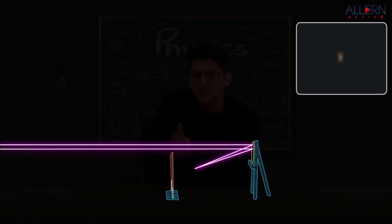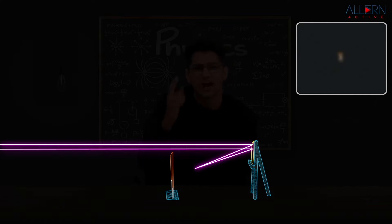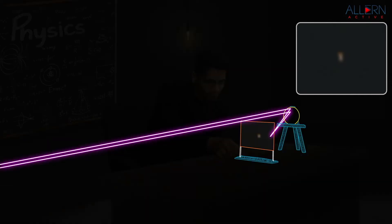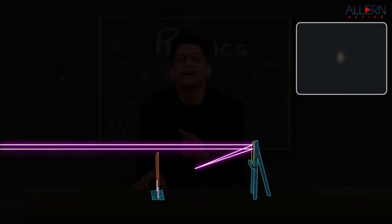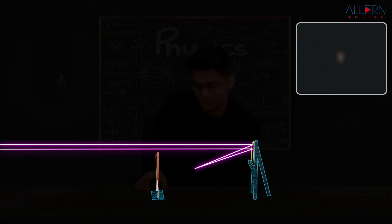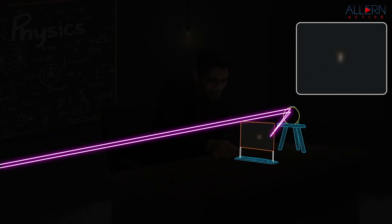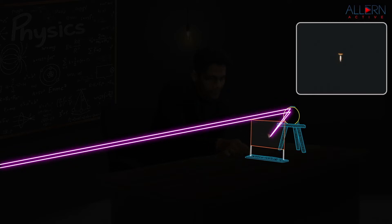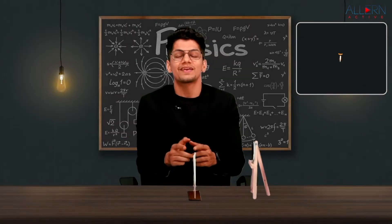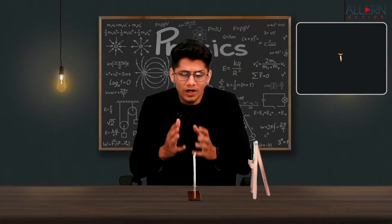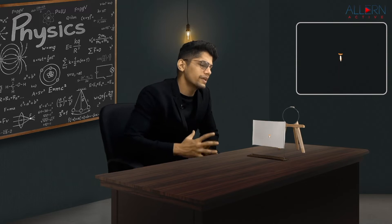Let's adjust the screen to find where we get a sharp image. If I move the screen away from the mirror, the image gets more blurred, so we move it towards the mirror. Now you can see that the image formed on the screen is a sharp image.